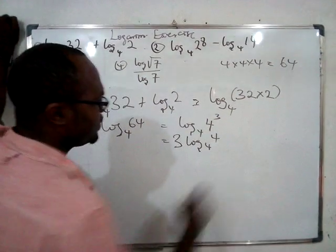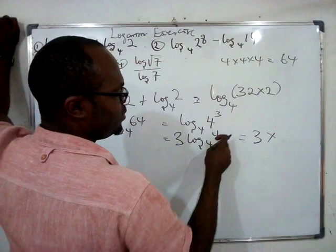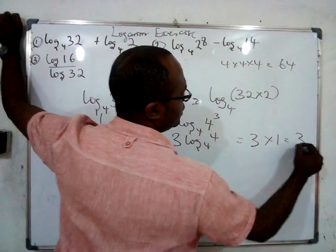That's one of the laws we gave, and this is the same thing as saying 3 times log₄4. Log of the same base is 1, which is equal to 3. So that's the answer.